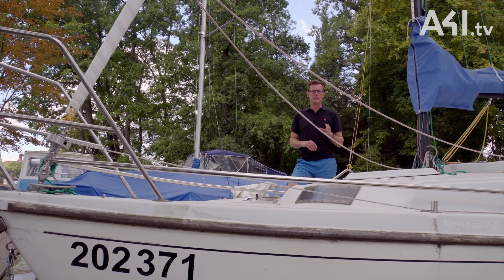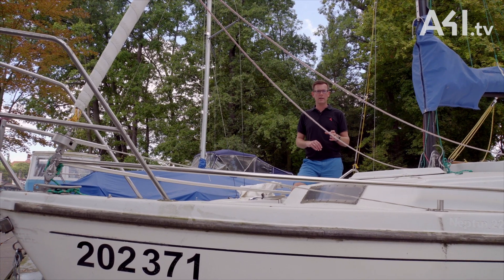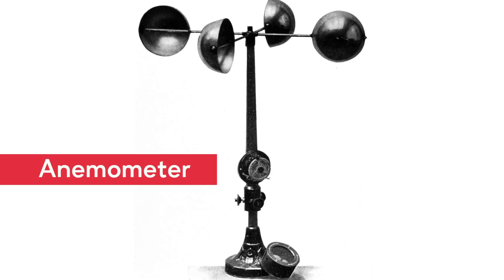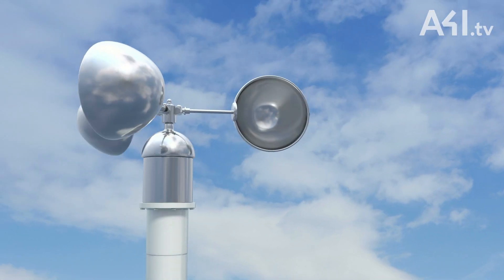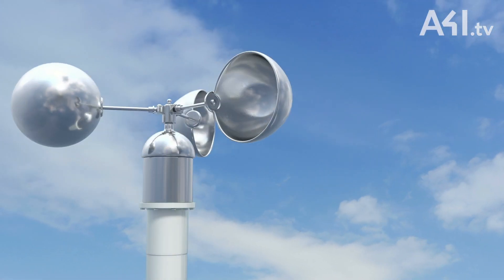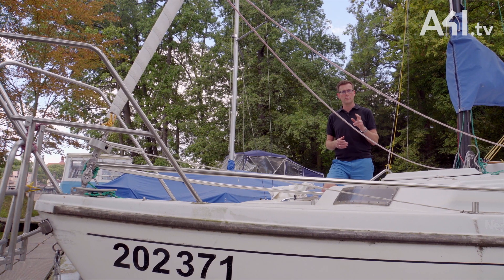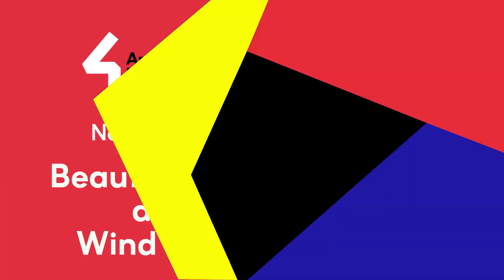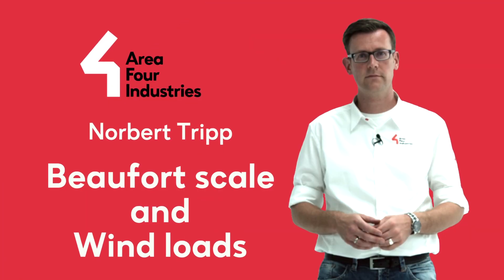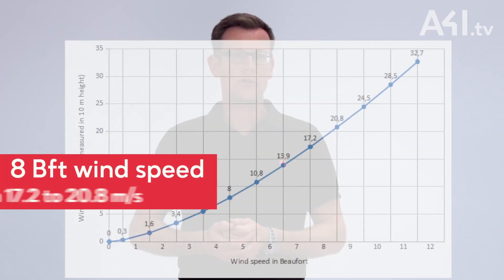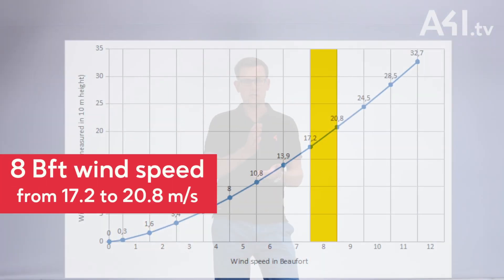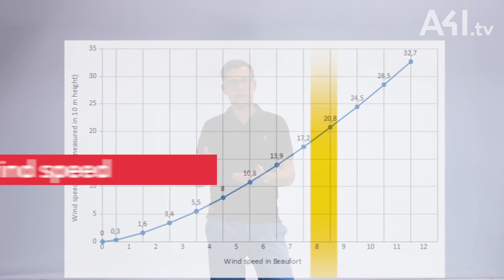Therefore, wind speed is currently measured with an anemometer. This allows the previously mentioned speed units to be assigned to the relevant Beaufort classification. For example, an 8 Beaufort wind speed covers a range from 17.2 to 20.8 meters per second.